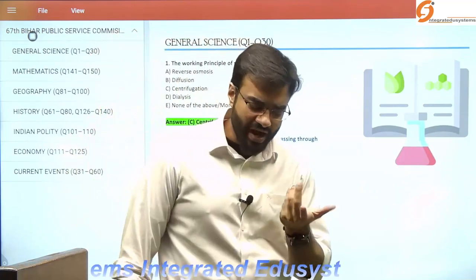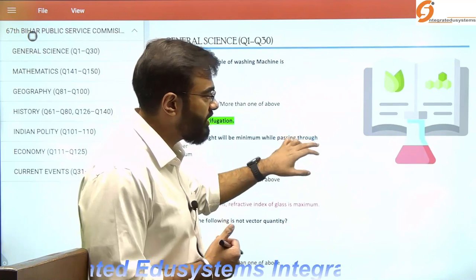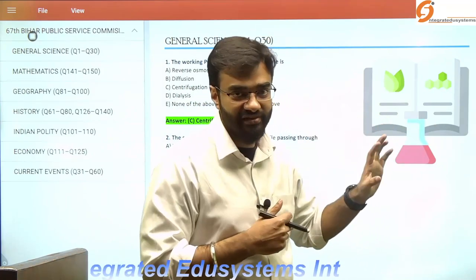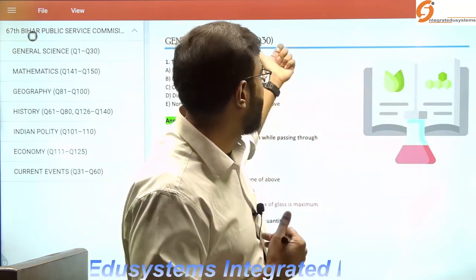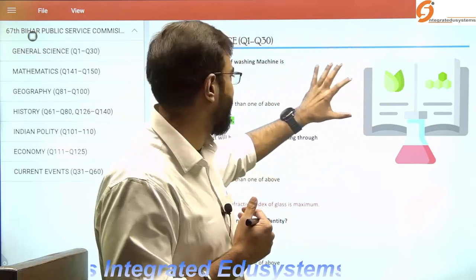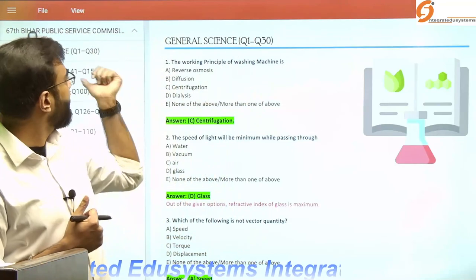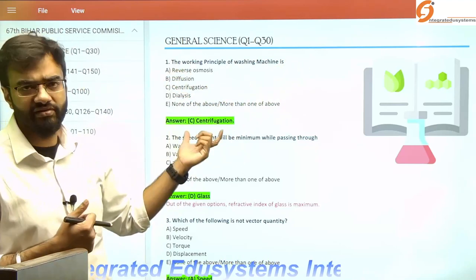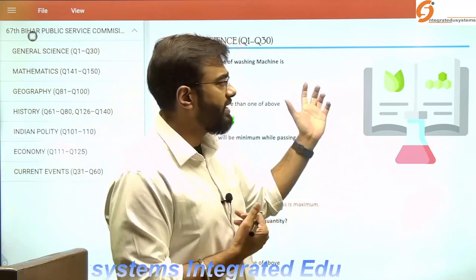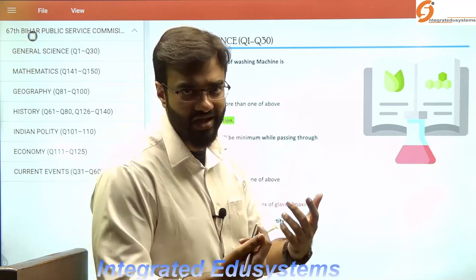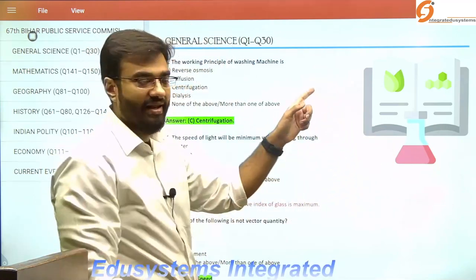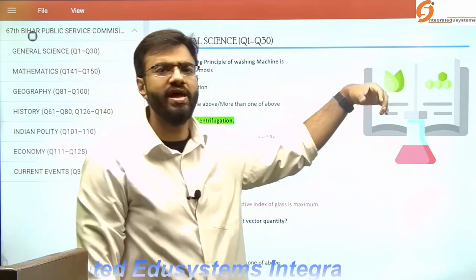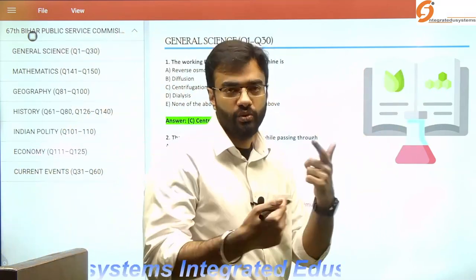Some questions demand explanation, some do not. Thirty questions were asked from general science, which was on the tougher side. The working principle of a washing machine is centrifugation. When a car turns left or right, we experience a force towards the outer side—that's centrifugal force. In the washing machine, clothes revolve similarly.